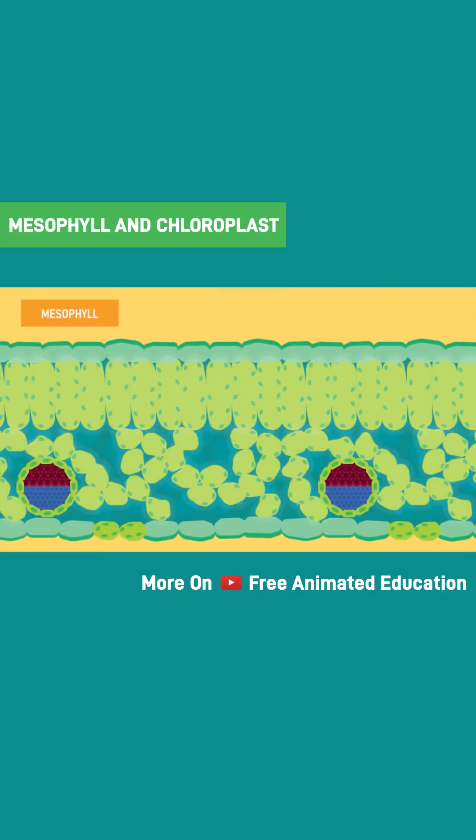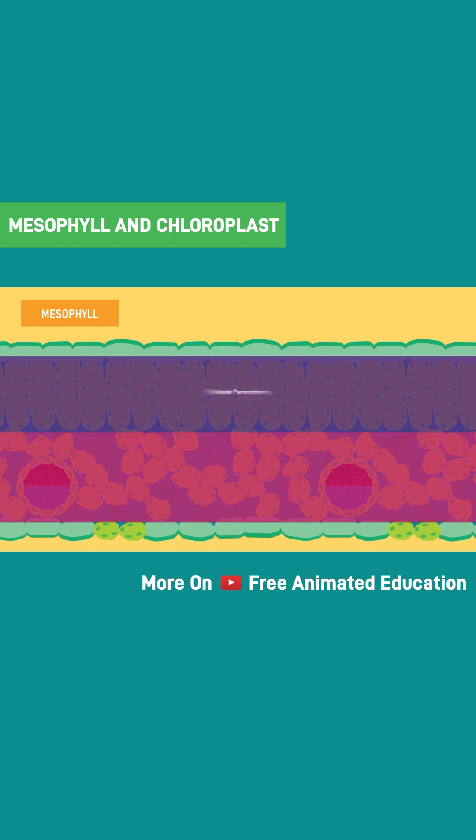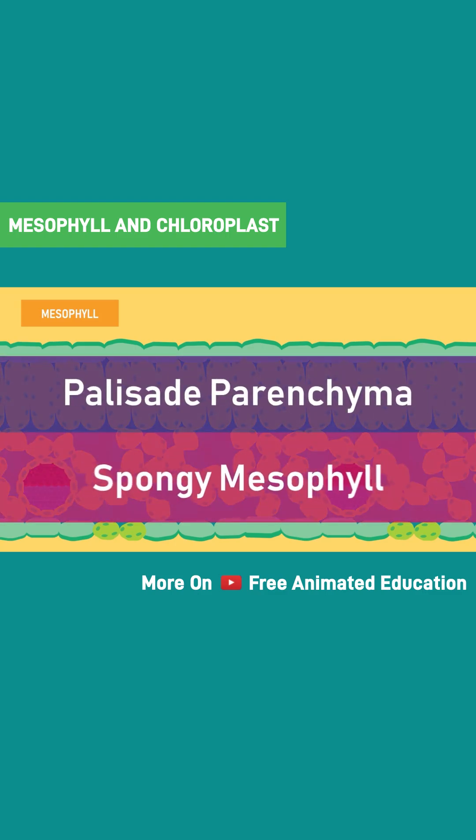In some plants, layers of cells known as mesophyll are present. This layer has two different arrangements of cells: palisade parenchyma and spongy mesophyll.